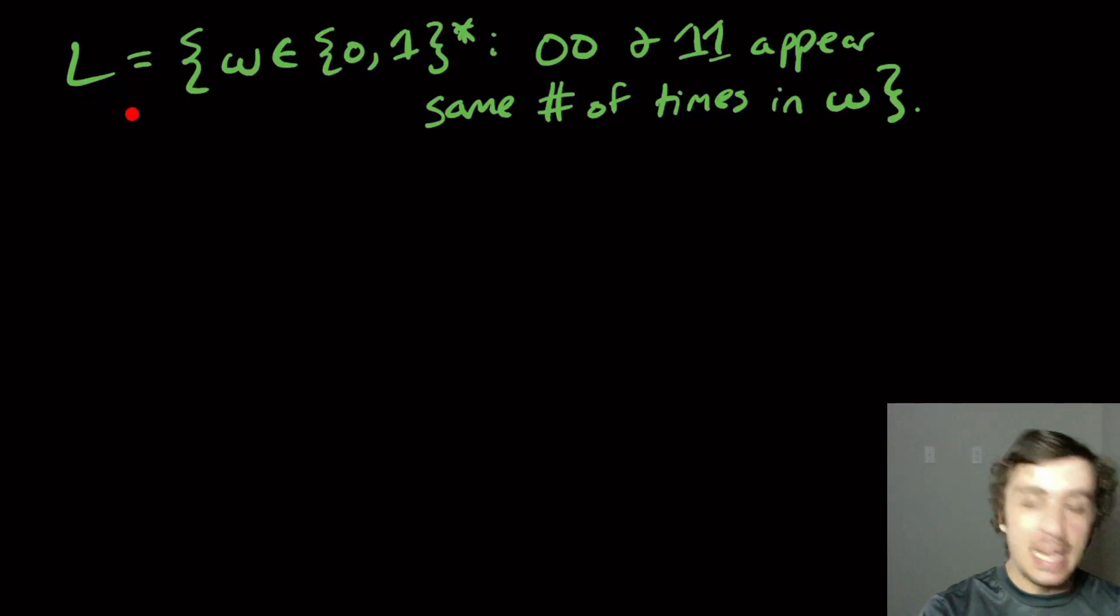All right, so let's prove that this language is not regular, which is the set of all strings over {0,1}* such that the number of 00s and 11s in W is the same.